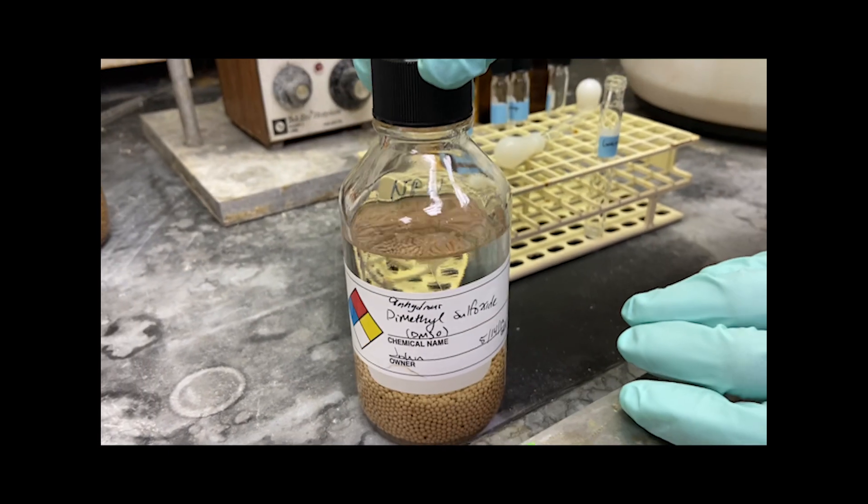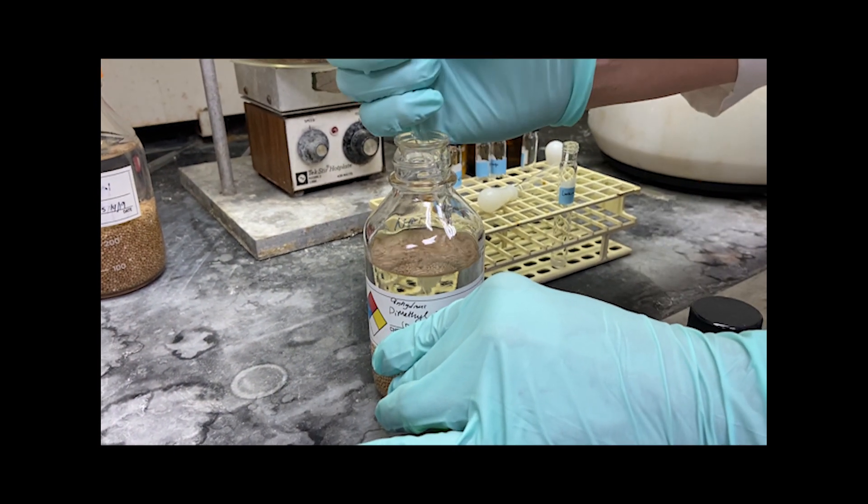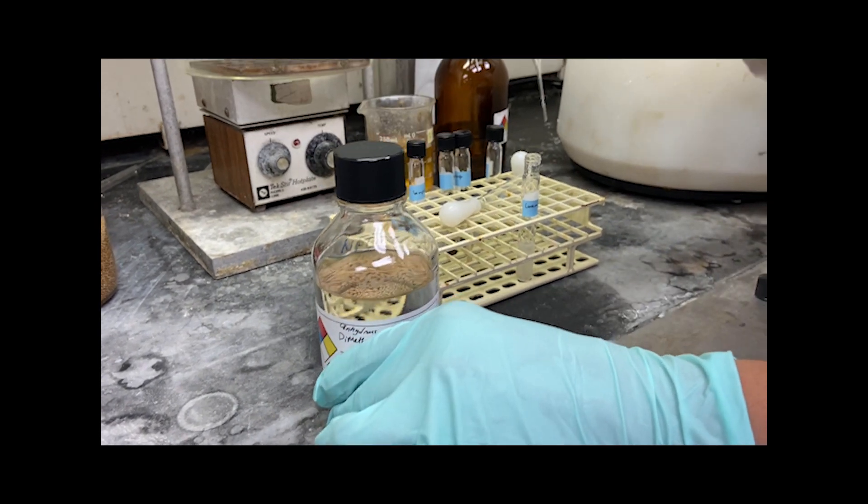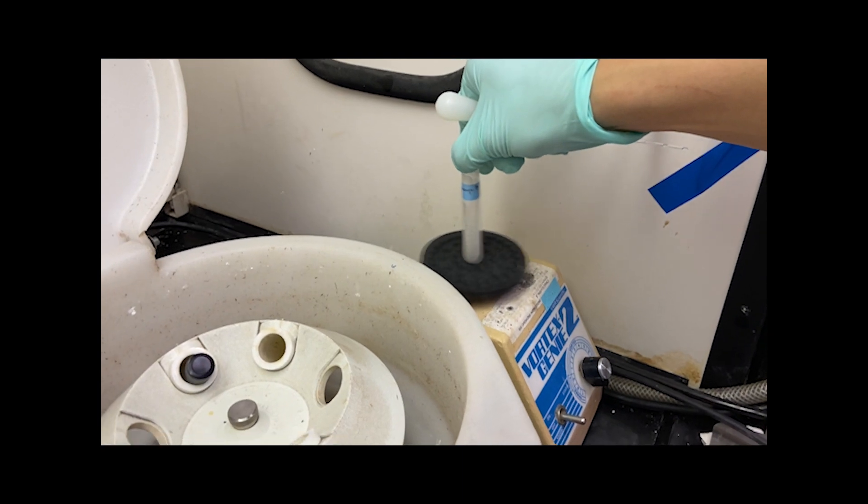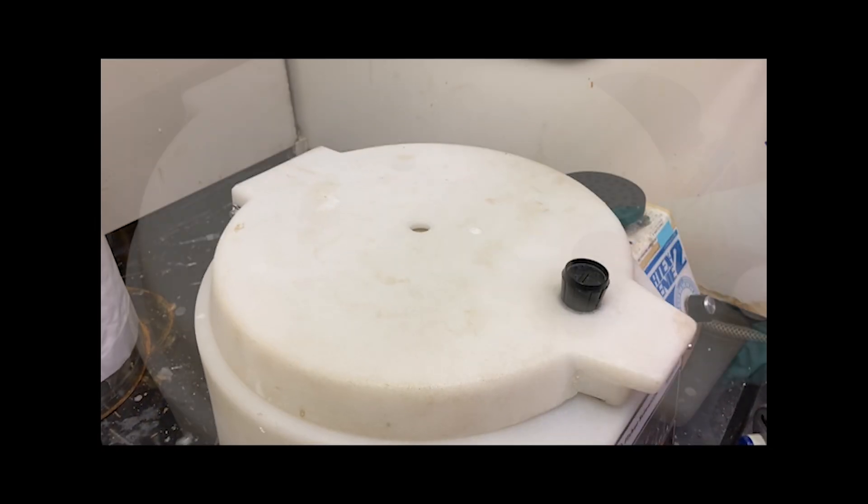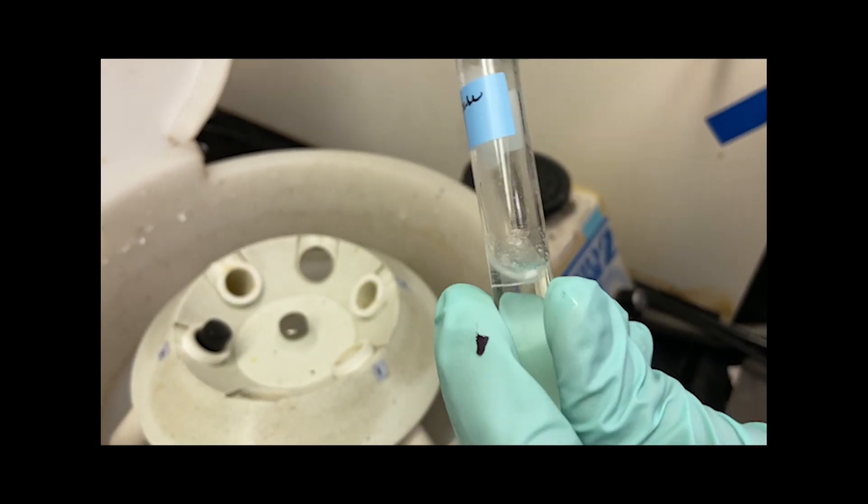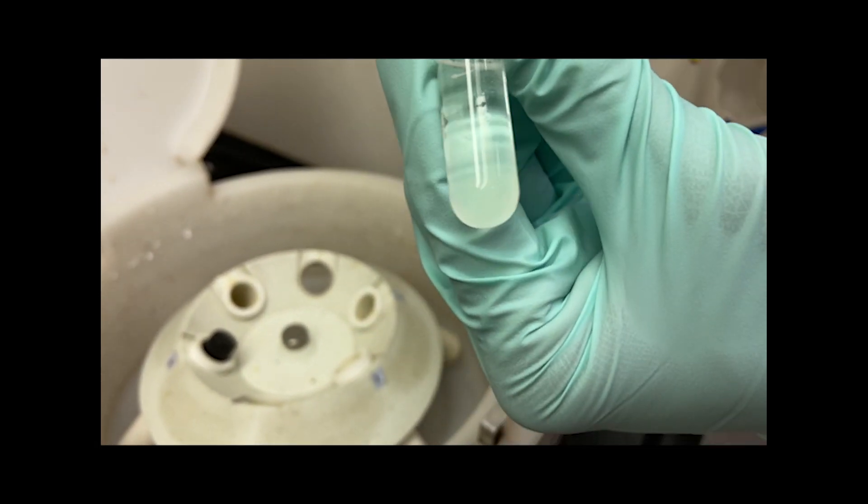Next, we add 2 milliliters of DMSO, vortex for 5 seconds, and centrifuge for 30 seconds to pellet the base. Here we have the base pelleted at the bottom of the tube. It is more opaque than the DMSO top layer.